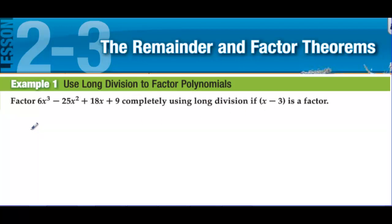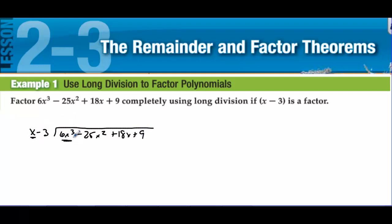We're going to start out with long division. We have x minus 3, and we're going to divide that into 6x³ minus 25x² plus 18x plus 9. In long division, we only look at the leading terms. What do we take times x to get 6x³? We multiply by 6x², which gives us 6x³, and then 6x² times negative 3 gives us negative 18x².